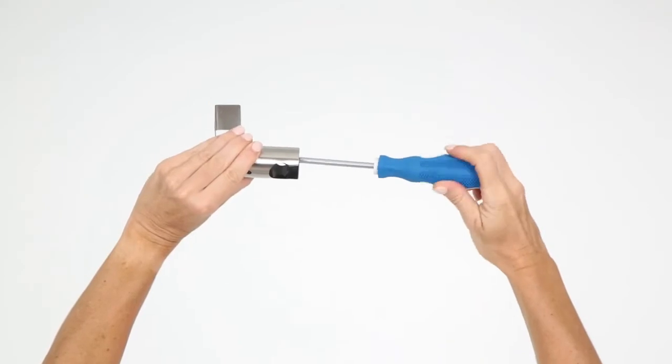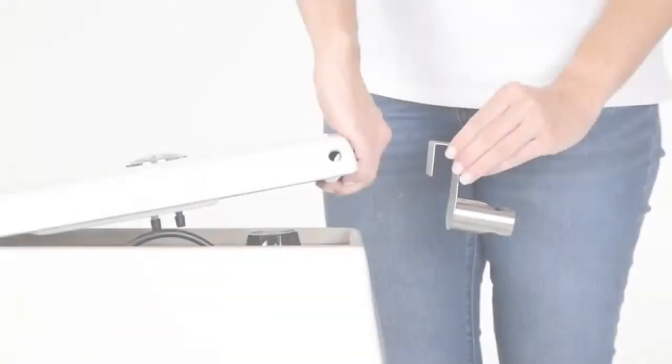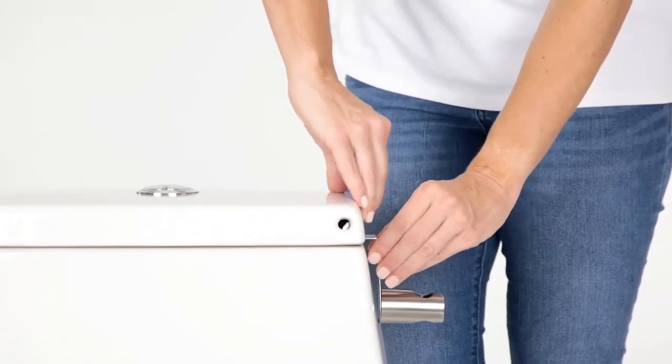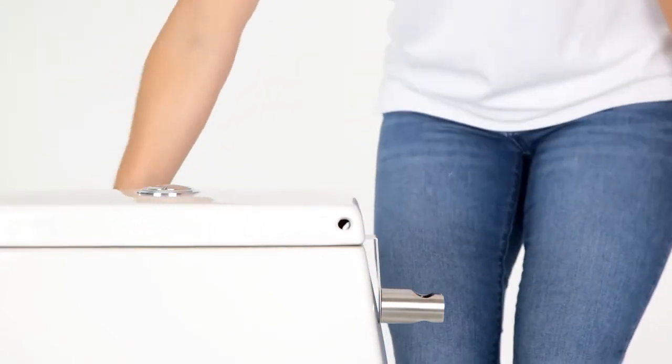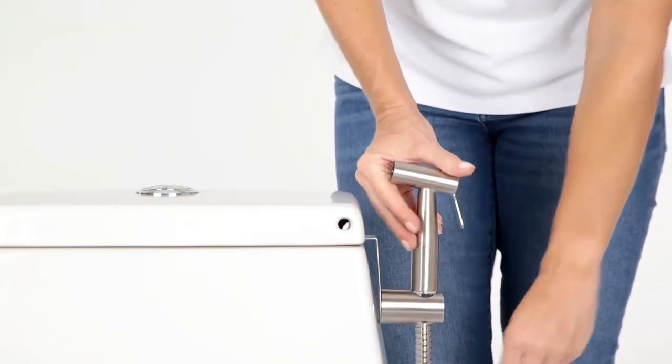Attach the sprayer holder and hook using the included screws. Lift the toilet tank lid and hang the mount on the side of the toilet in desired location. You may also choose to use the wall mount provided.